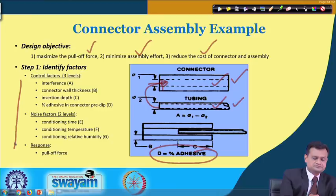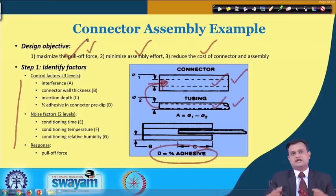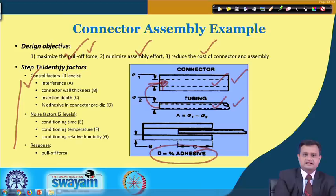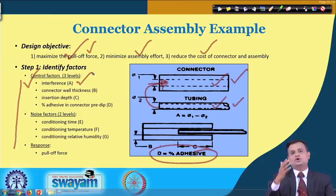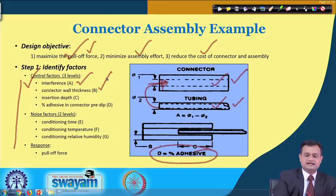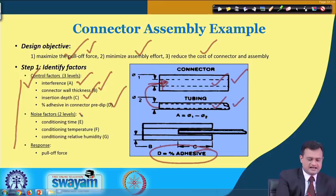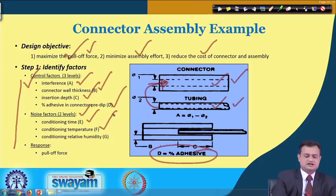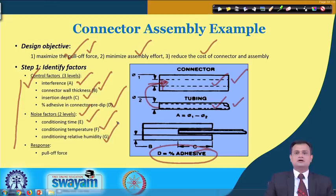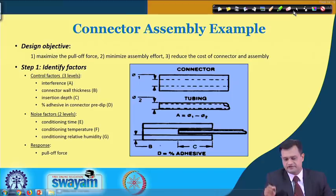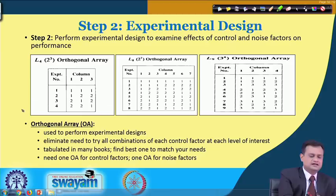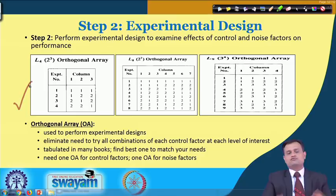The noise factors — conditioning time, conditioning temperature, and conditioning relative humidity — are not fully in your control but are known factors. Noise factors are set at two levels, and the response is pull-off force. Now the question is which orthogonal arrays are appropriate. Relevant options include L4 (2³), L8 (2⁷), and L9 (3⁴).